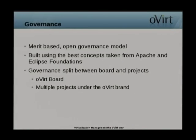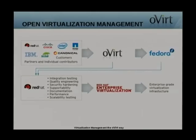A little bit about the community. The oVirt community uses an open merit-based governance model inspired by both Apache and the Eclipse Foundation. The oVirt board consists of members from Red Hat, SUSE, Canonical, Intel, NetApp, IBM, and Cisco. The oVirt project is divided into several sub-projects — currently 16 of them.